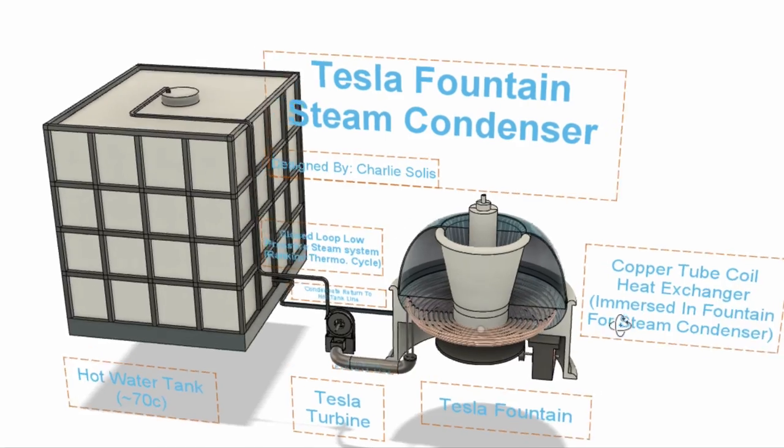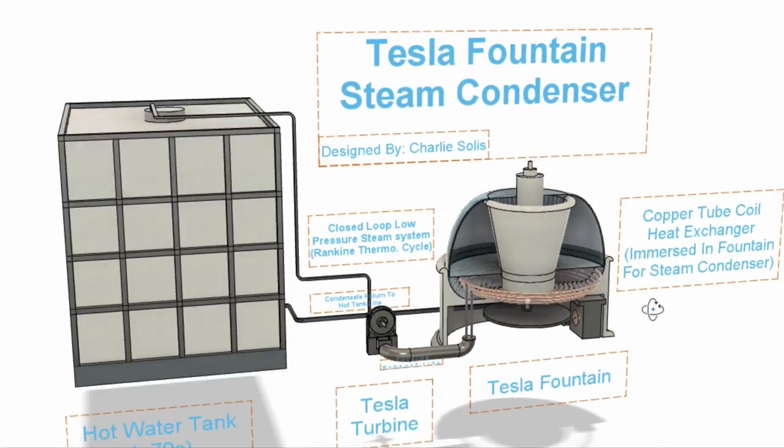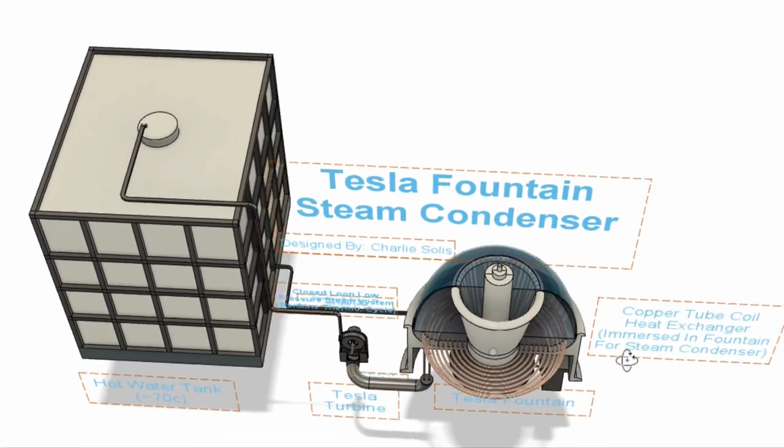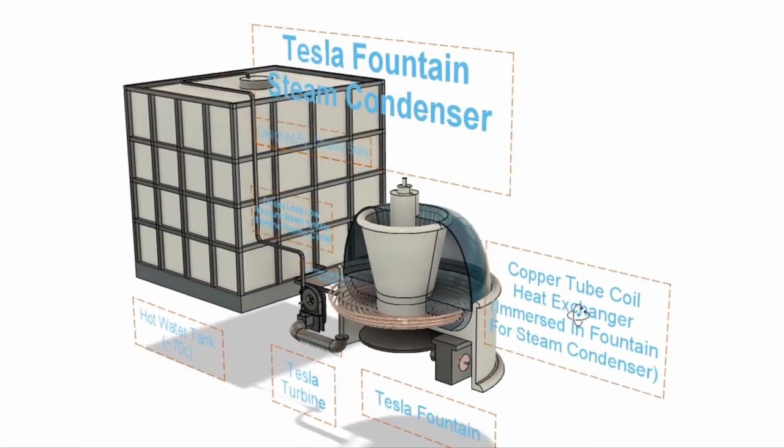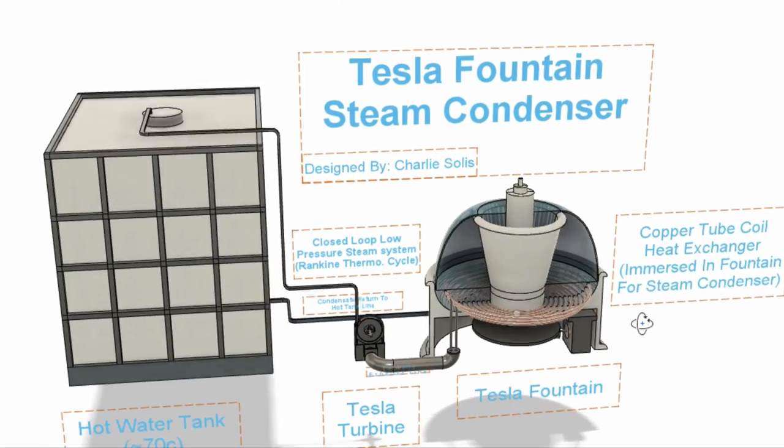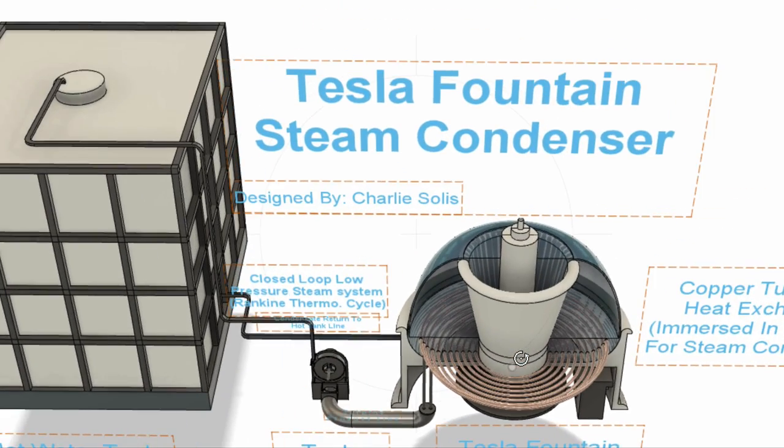So today I want to show you something special that I have devised using a couple of Tesla's patents. What I have here is an early preview of my plans to use a Tesla fountain as a steam condenser by using the fountain's water flow as a water-to-air heat exchanger to continuously expel the heat of condensation in the condensing section of the closed-loop cryophorus system.